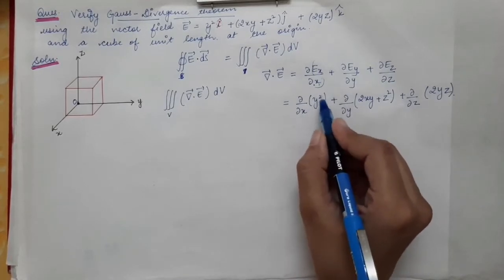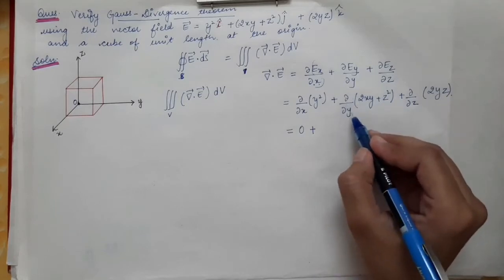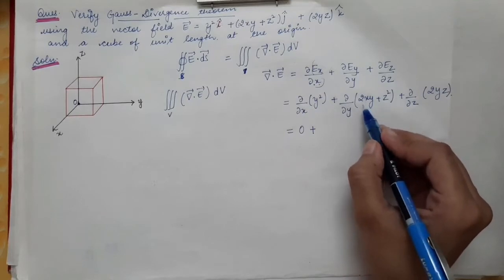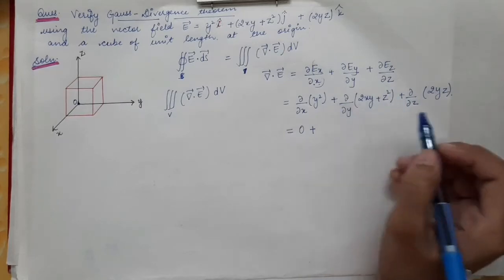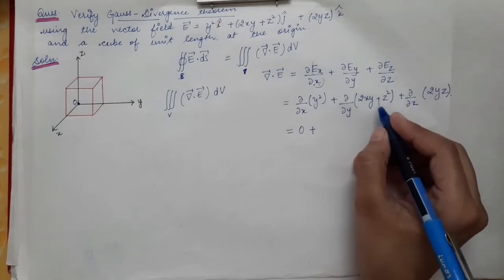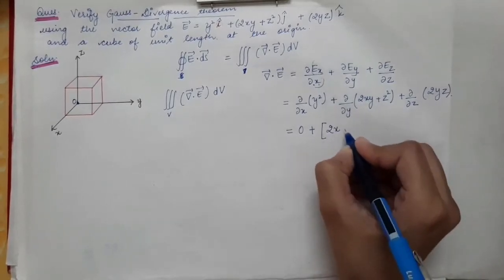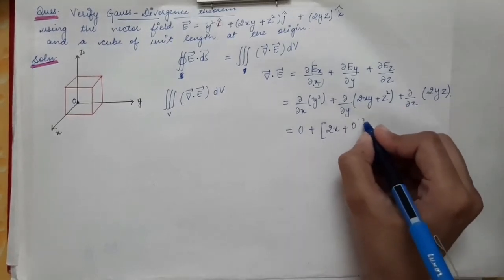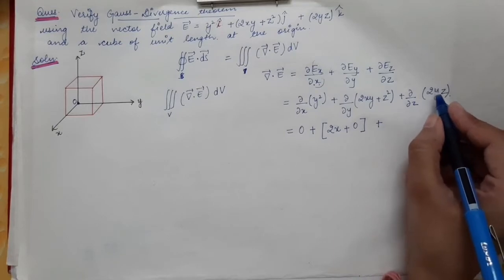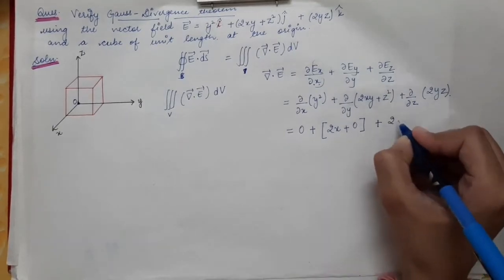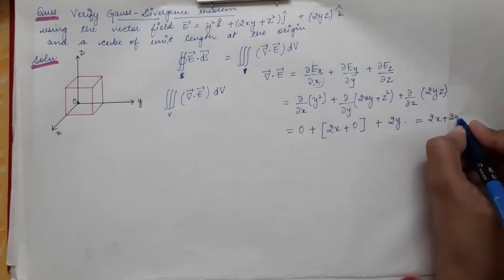The first term ∂/∂x of y² equals 0 because y² has no x variable. For the second term, differentiating 2xy with respect to y gives 2x, and differentiating z² with respect to y gives 0 since z² is constant. For the third term, differentiating 2yz with respect to z gives 2y. Therefore, divergence of E = 2x + 2y.